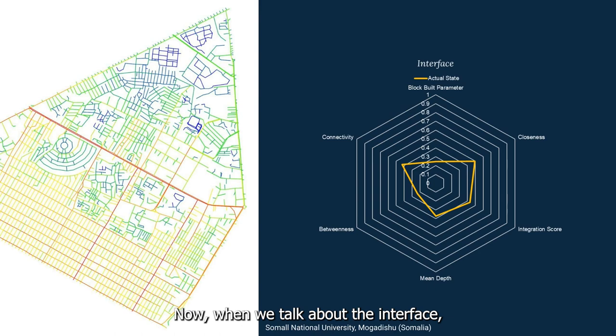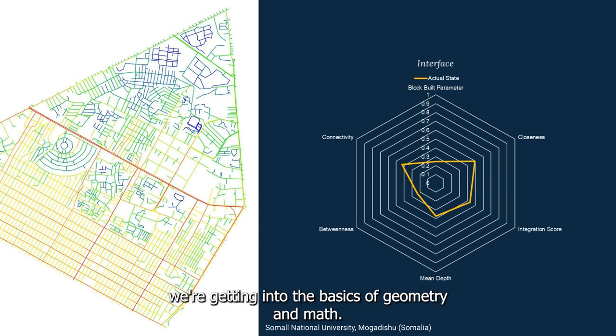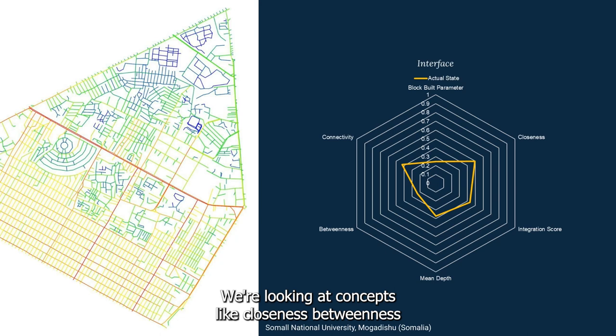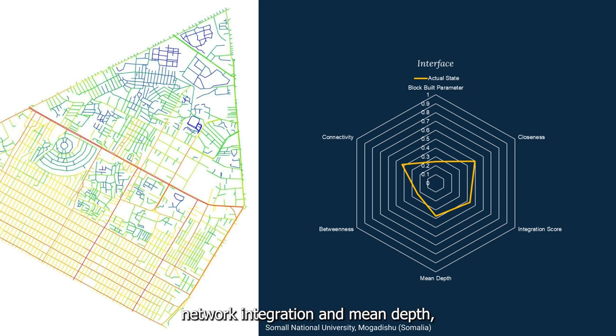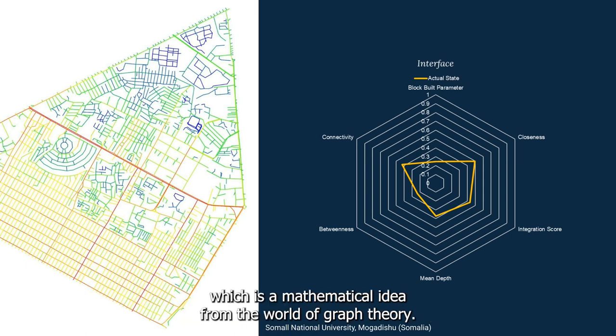When we talk about the interface, we're getting into the basics of geometry and math. We're looking at concepts like closeness, betweenness, network integration, and mean depth, which is a mathematical idea from the world of graph theory. It's like uncovering the hidden mathematics behind the urban flow.